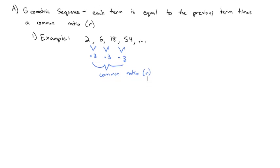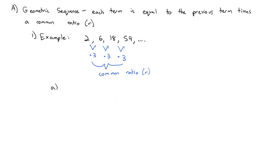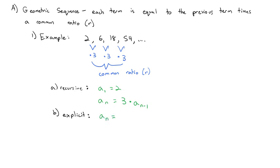We're going to start by defining this geometric sequence recursively, and then look at how we can find it explicitly. Recursively, the first term is equal to 2, and then every term after that, we take the common ratio of 3 and multiply it by the previous term. That leads to the explicit formula, which, just like with the arithmetic series, is the one we'll use the most.